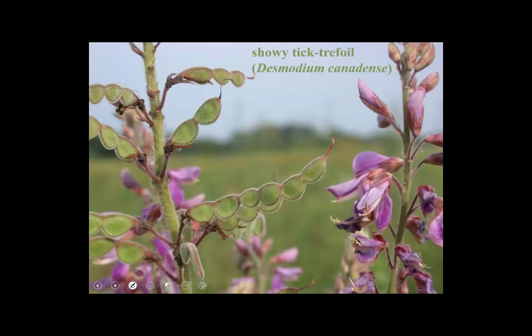The fruits of the legume family are legumes, but there's some modification. This is a member of genus Desmodium — also generally called Tick Trefoil. This is an individual fruit, but when mature it breaks apart into one-seeded units, kind of reminiscent of a schizocarp.